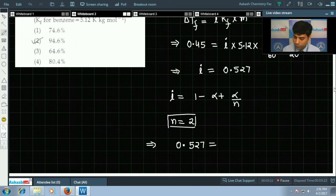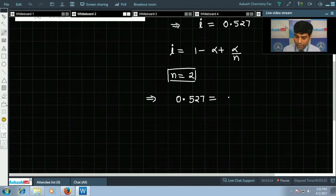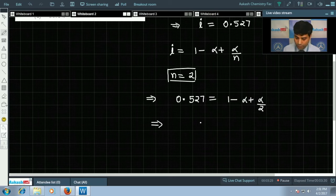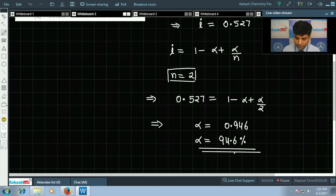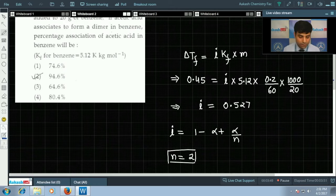This equals 1 minus alpha plus alpha by 2. On solving, we'll get the value of alpha which is 0.946. This is in fraction, so in percentage we multiply it by 100. So alpha in percentage is 94.6 percent. The correct answer for this question is option 2. Now let's move to question number 38.